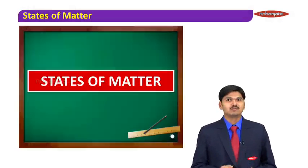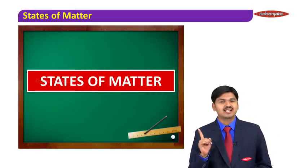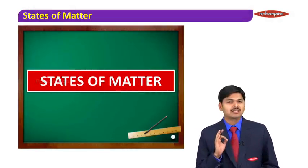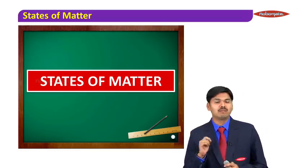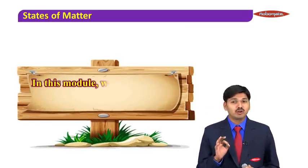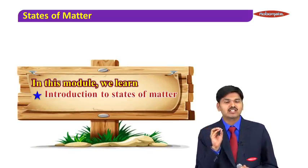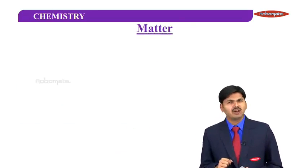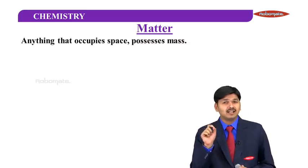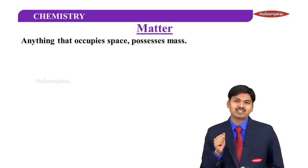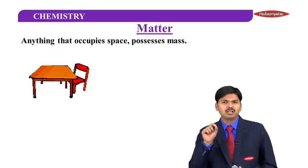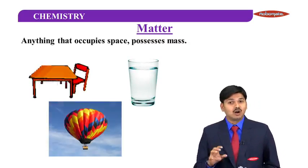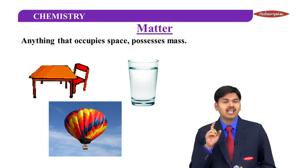Hello friends, welcome to the new chapter called States of Matter. In this chapter we are going to learn some interesting facts about the word matter. In this module we will learn introduction to states of matter. Let me start with the word matter. As we all know, matter is anything that occupies space and possesses some mass. For example, this chair and table, or a glass of water, or some balloon containing air.